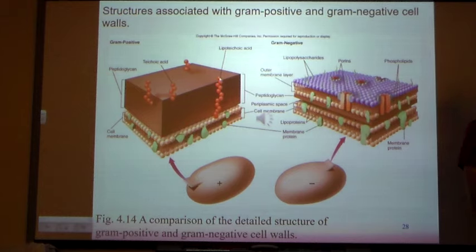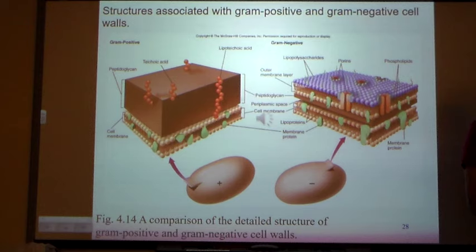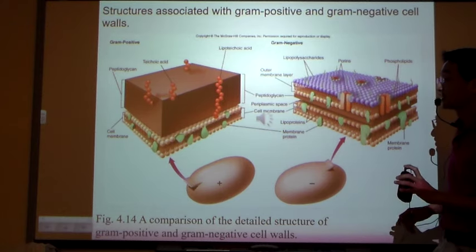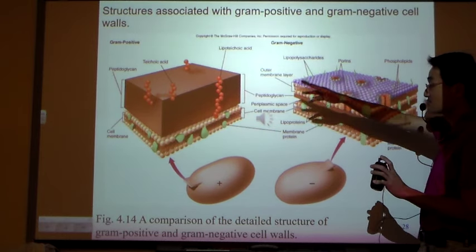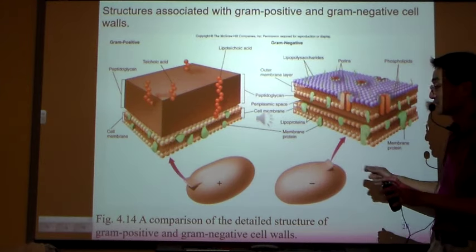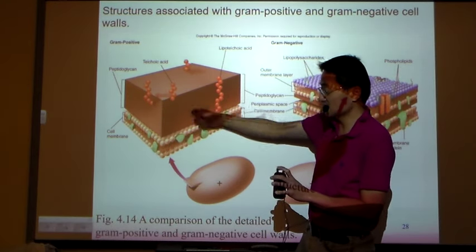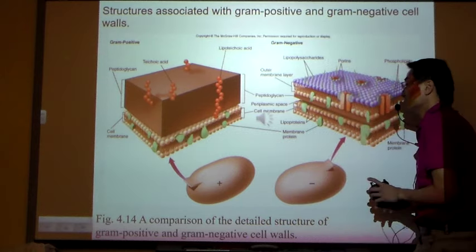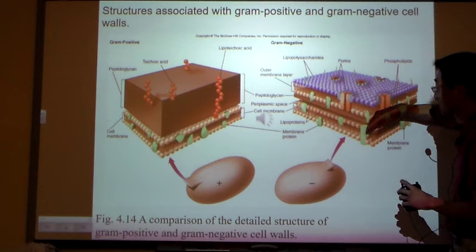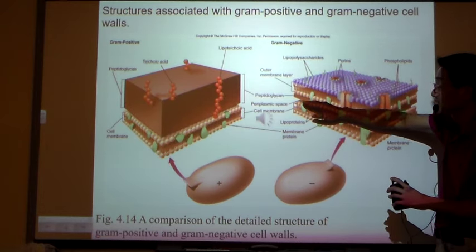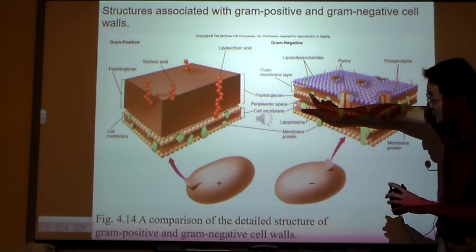Next week we're going to do a gram stain to differentiate between gram-positive and gram-negative bacteria. This is very important — you need to know the structure of bacteria very well. There will be multiple questions asking you the differences between gram-positive and gram-negative cell walls. Remember: gram-positive bacteria have a thick layer of peptidoglycan and one layer of cell membrane. Gram-negative bacteria have two layers of cell membrane with only a thin layer of cell wall sandwiched between them.